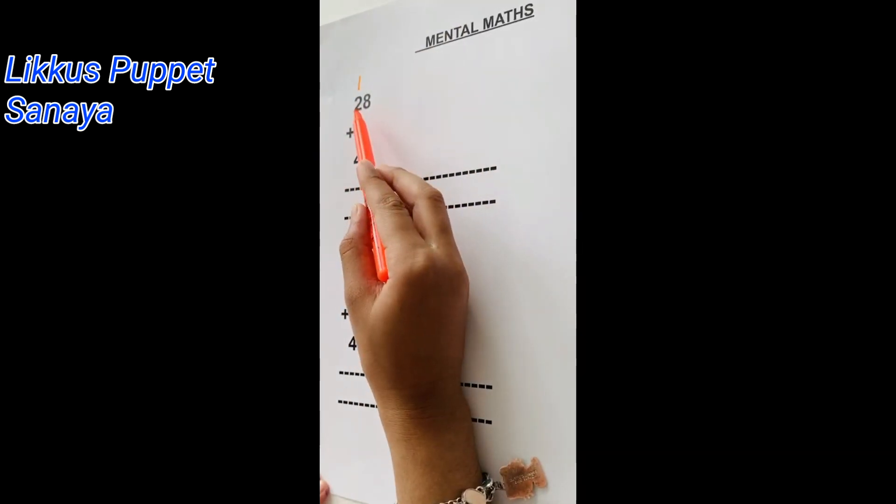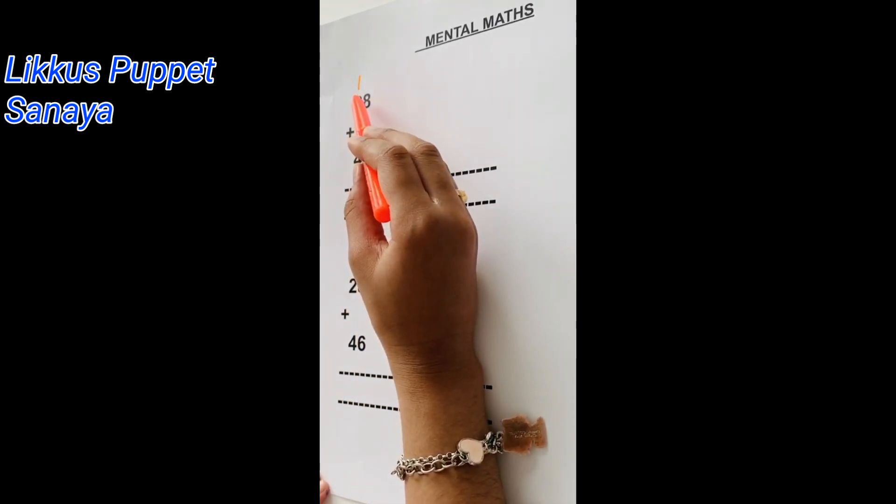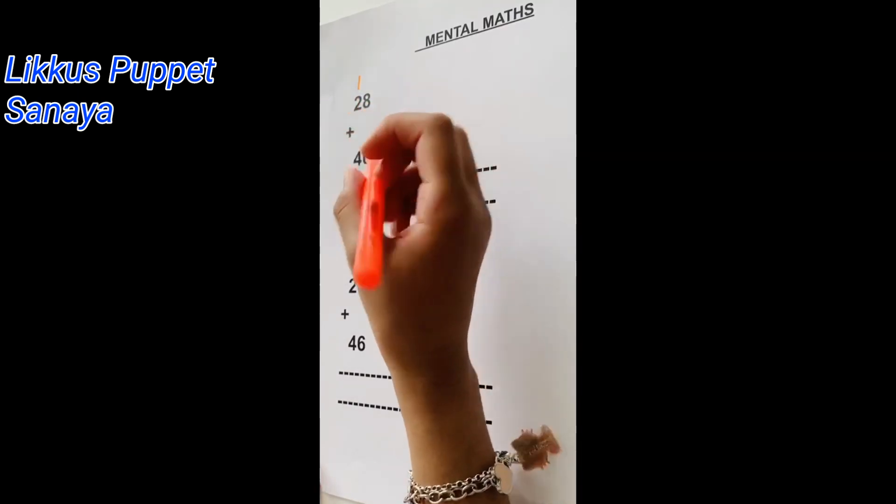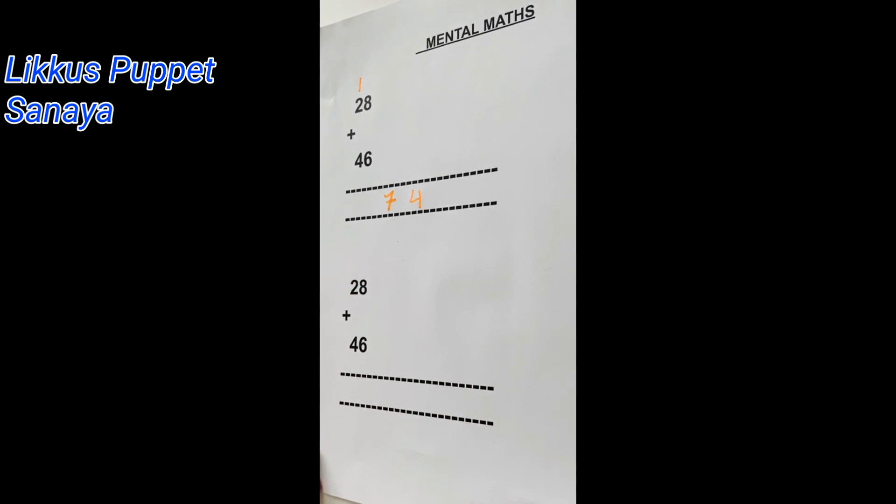And we would add 2 plus 4. That's 6. And add 1 that we carry forward. And that would be 7. So we would just write the 7 down and that would be 74.